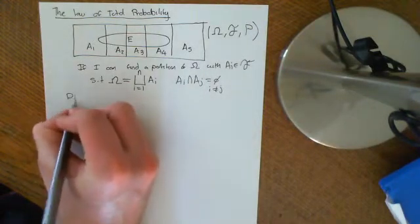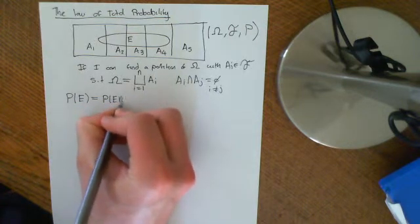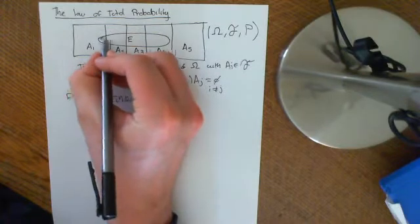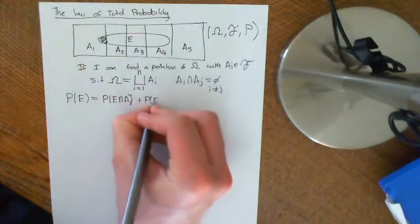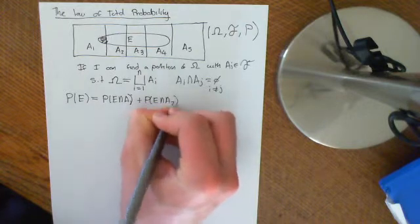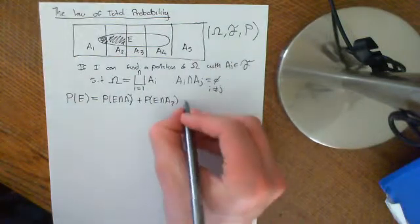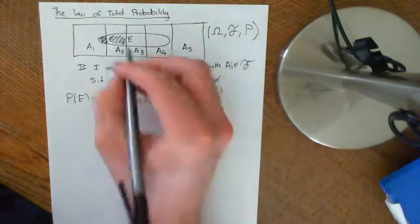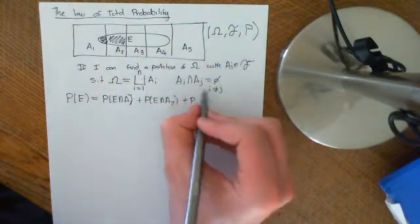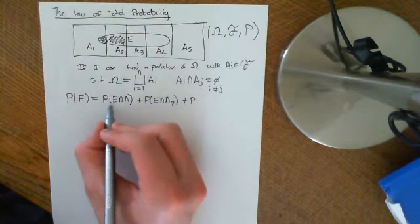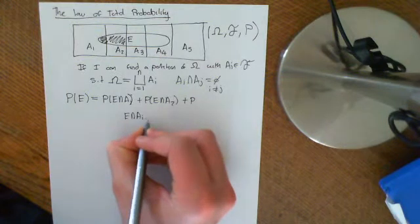Then, if I consider the probability of E, it's going to be equal to the probability of E intersect A1 — so we get this bit — plus the probability of E intersect A2 — and we're using the second axiom of a probability space here — because all of these: since A1, A2, A3, A4, A5 are all disjoint, when I intersect them with E, the sets E ∩ Ai are all disjoint.